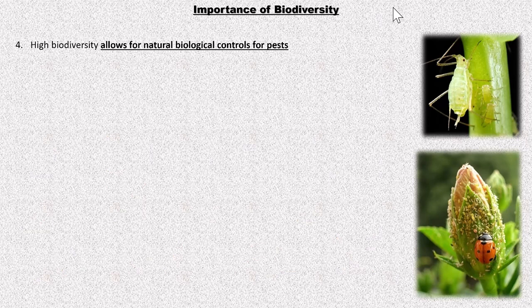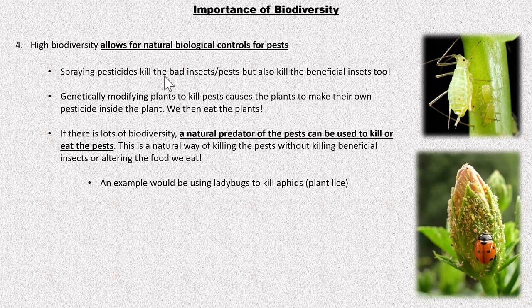Another importance: a lot of biodiversity allows for natural biological controls for pests. Is it better to spray a field with pesticides, create a genetically modified plant that kills bad insects, or find a natural predator to kill a local pest? Spraying pesticides kills bad insects, sure, but beneficial insects die too. Also, spraying creates a high chance of pest populations that are resistant to all those chemicals — a superbug population — because only the resistant bugs survive, reproduce, and pass on their resistant genes.